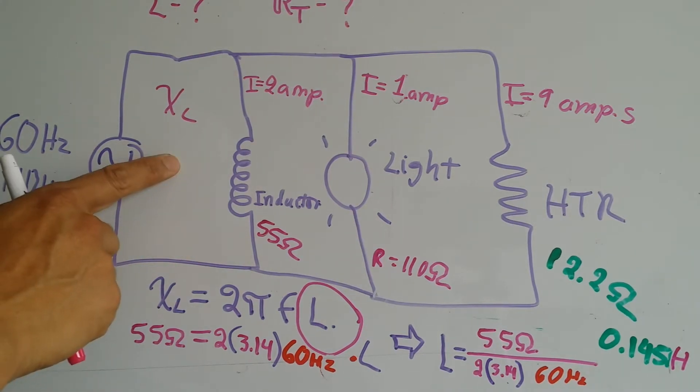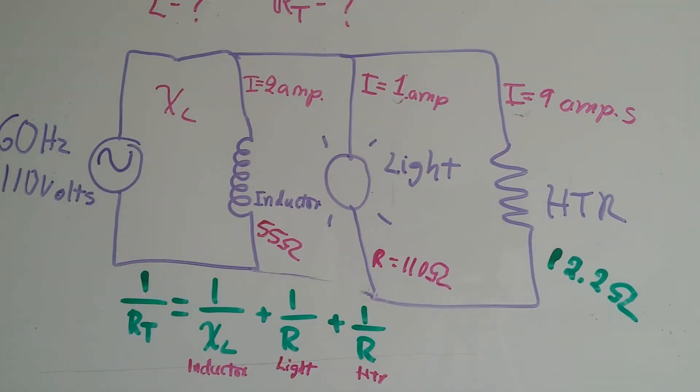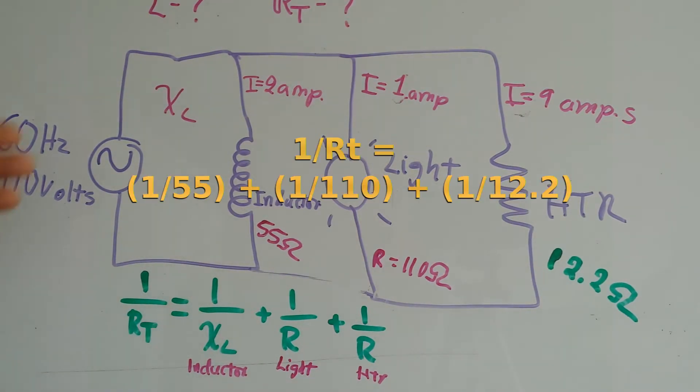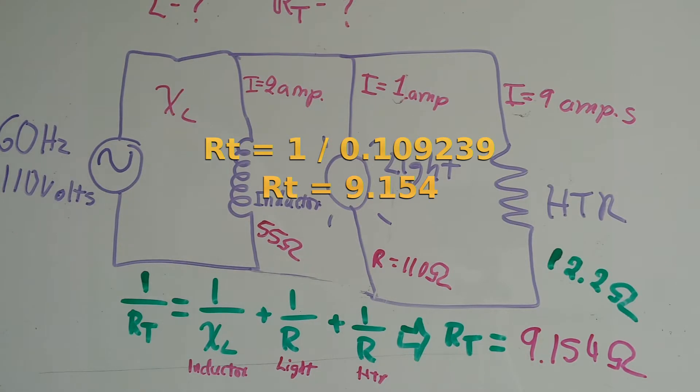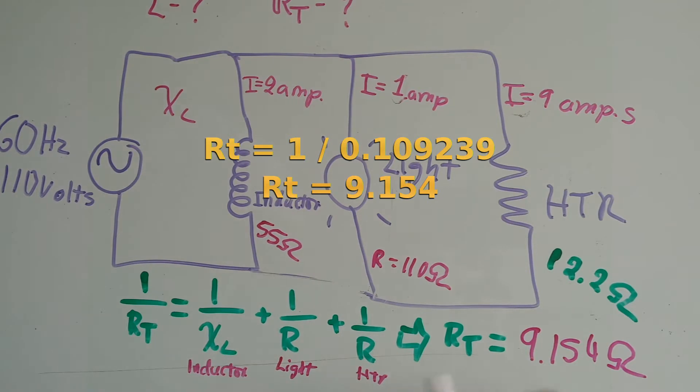Now for the total resistance of the circuit. To get the total resistance, we're going to have to use this Ohm's law formula for resistance. We're going to have the reactance of the inductor and add it to the resistance of both the light and the heater. After replacing everything, which is just basic math, you're going to get this total resistance.